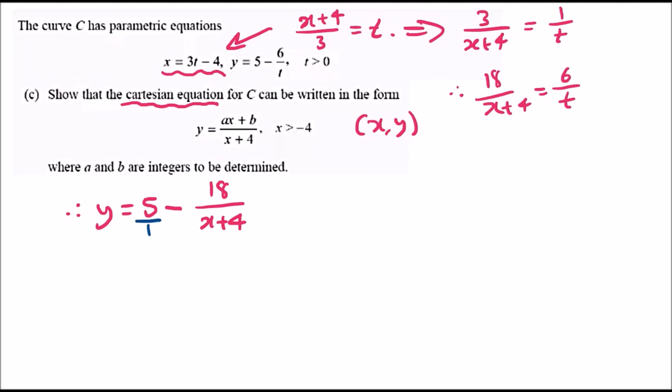This 5 must be over x plus 4. To do that, just literally rewrite 5 over 1 and multiply up and down by x plus 4. This should give us 5 times x plus 4, which is 5x plus 20 all over x plus 4, minus 18 over x plus 4.